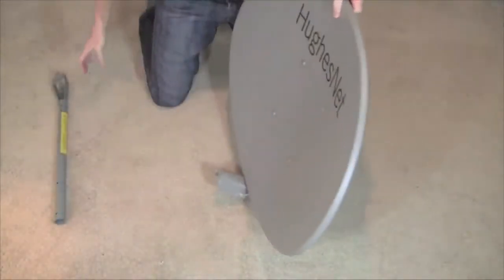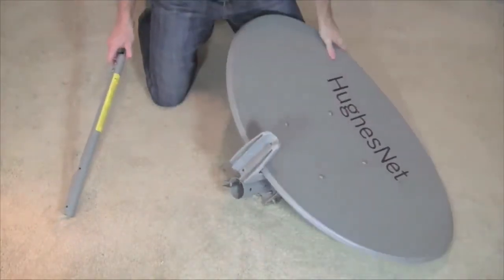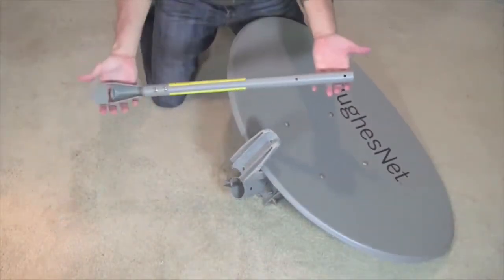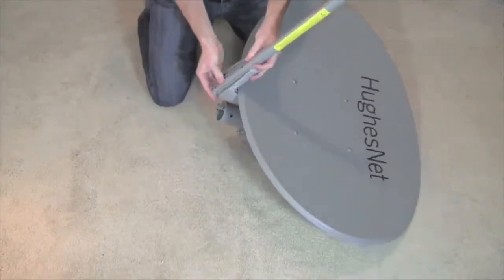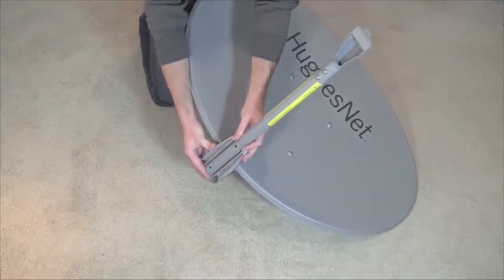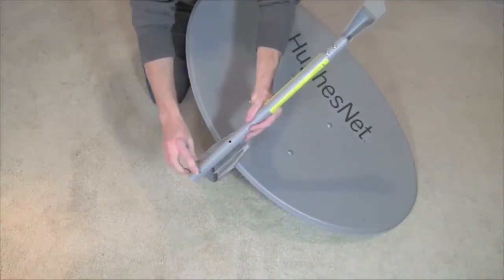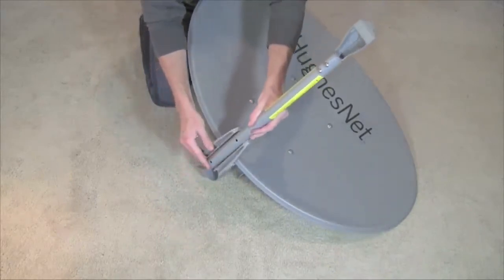The reflector has been secured to the assembly and we will now attach the feed arm. Avoid installing the feed arm upside down. Install the feed arm exactly as shown here. The two holes in the base of the feed arm align with the two holes at the bottom of the reflector bracket.